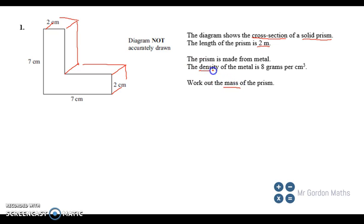We've been given the density of this metal piece of metal, which is 8 grams per centimeter cubed. So what links density and mass? We're missing something and that's the volume.